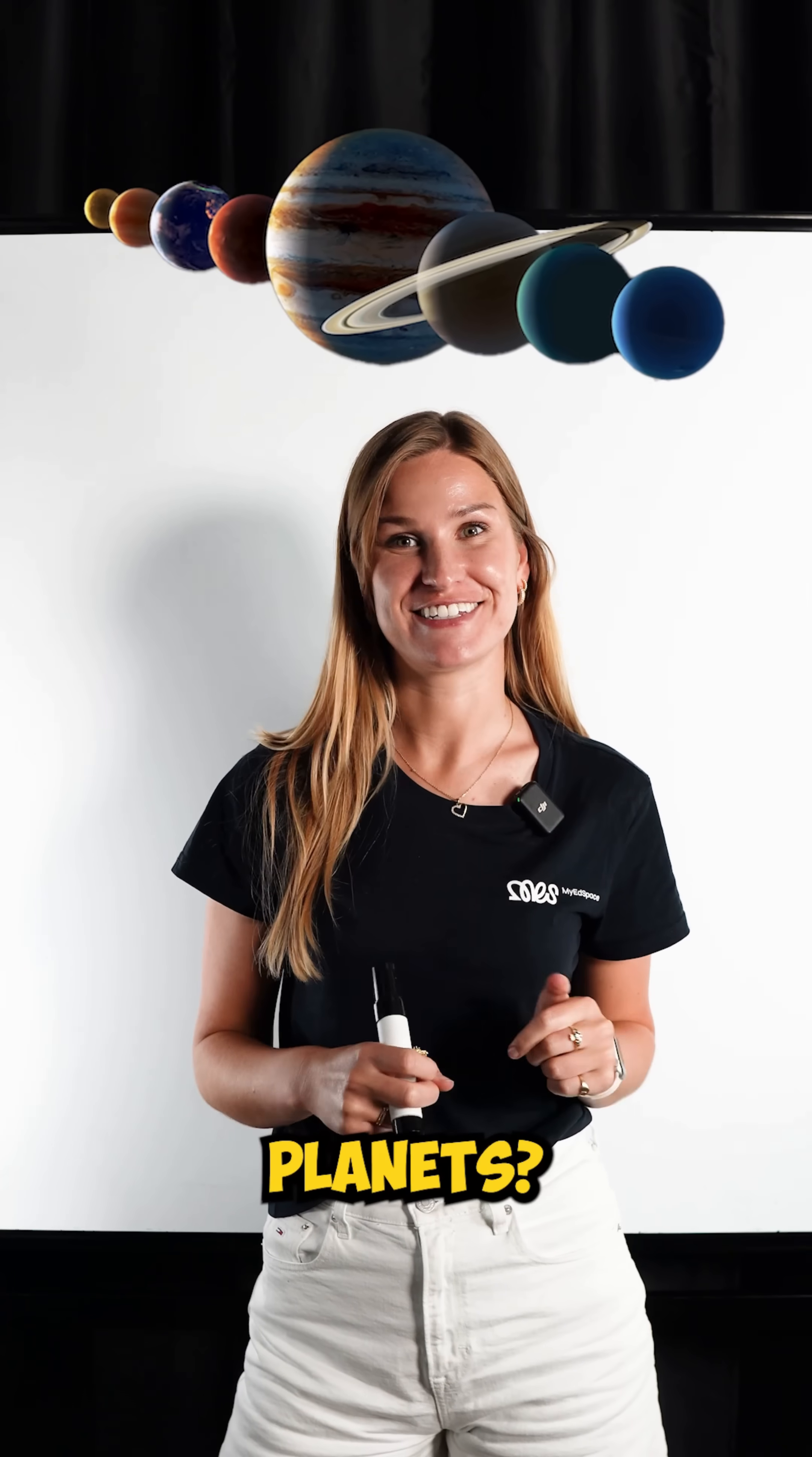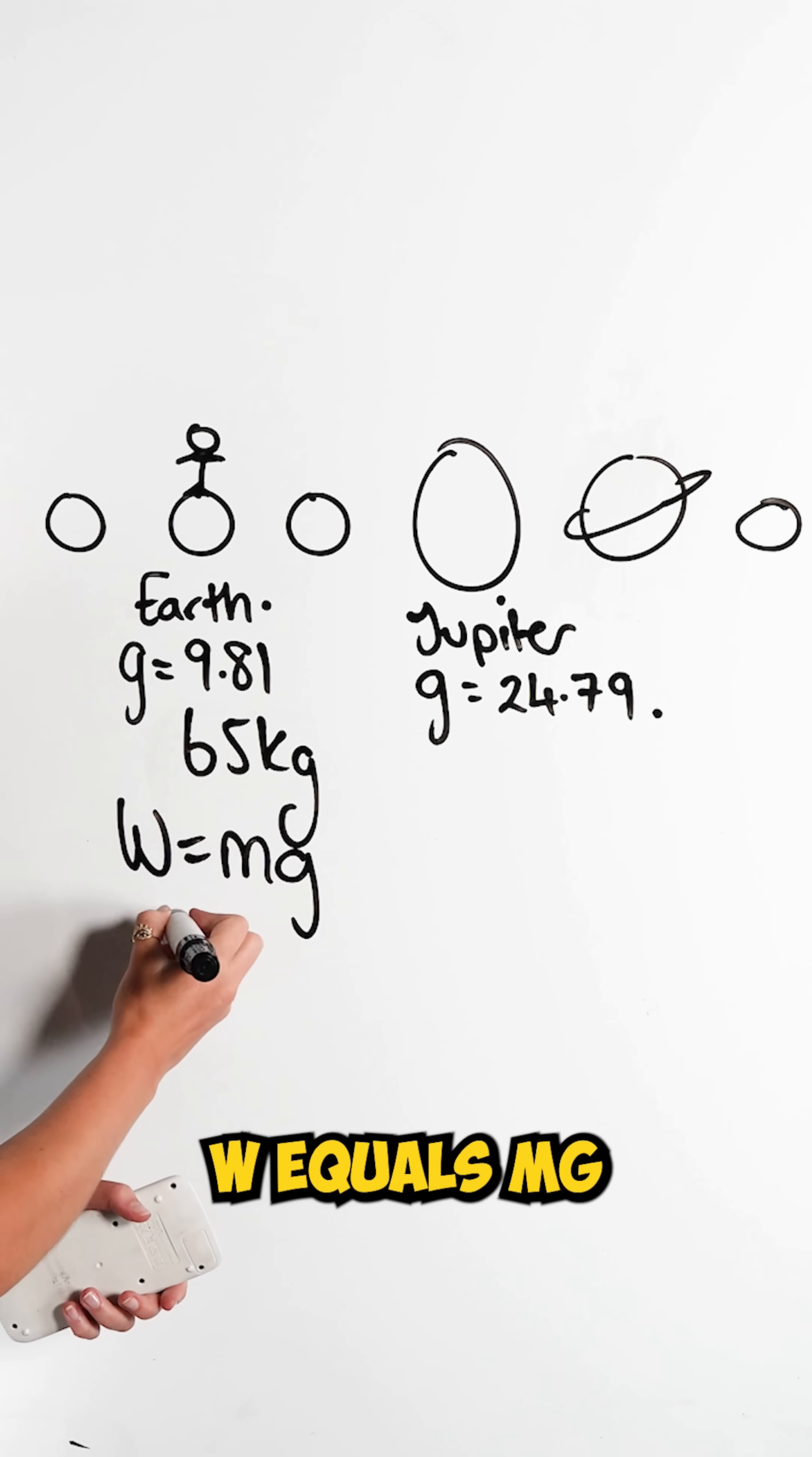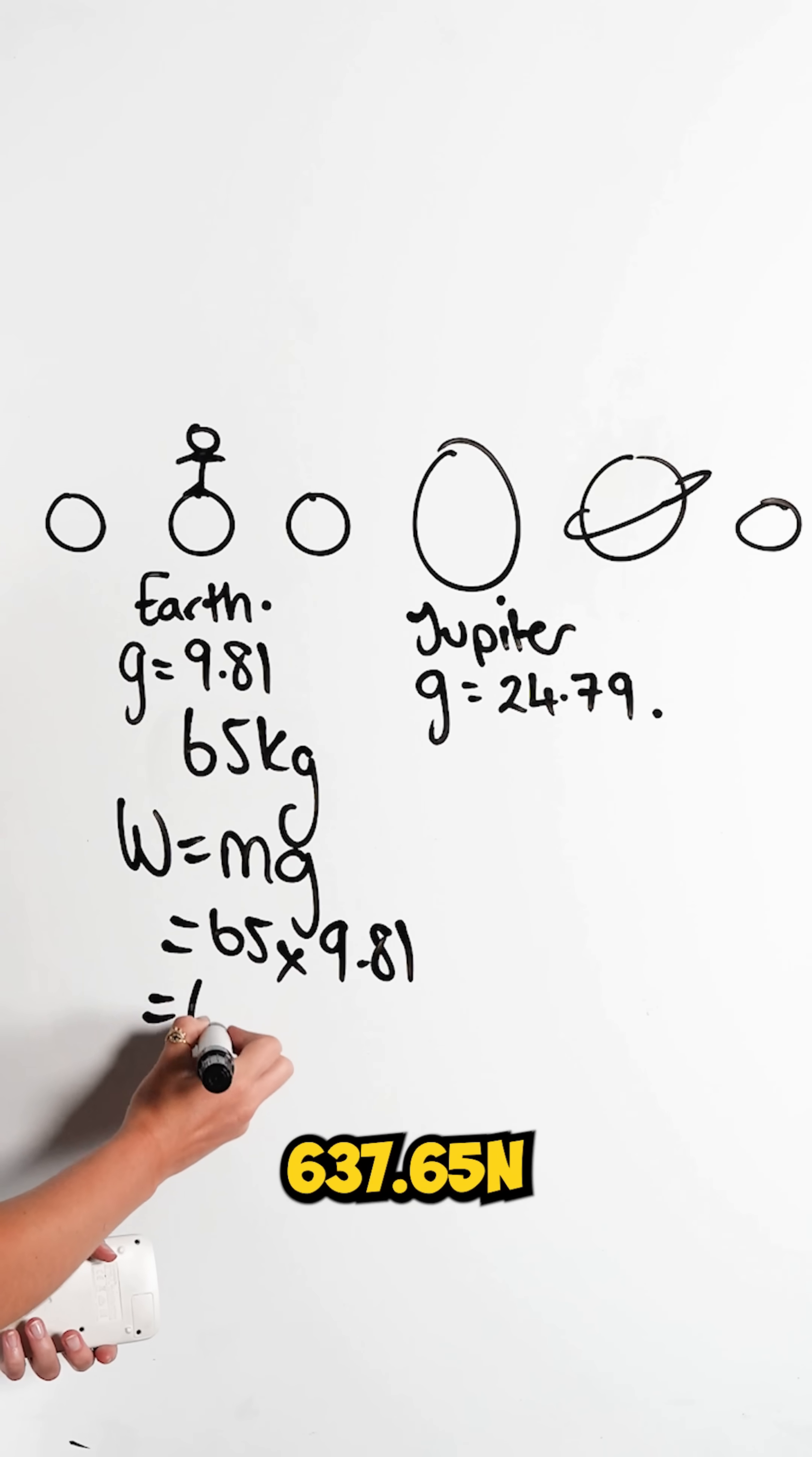What would you weigh on different planets? On Earth, if I've got a mass of 65 kilograms, we can calculate my weight using the equation w = mg. My mass then is 65 multiplied by, on Earth, the value of g is 9.81. To calculate my weight, it's going to end up being 637.65 newtons.